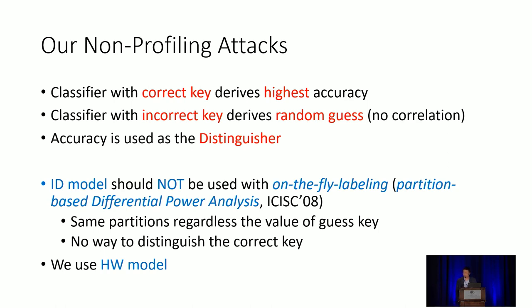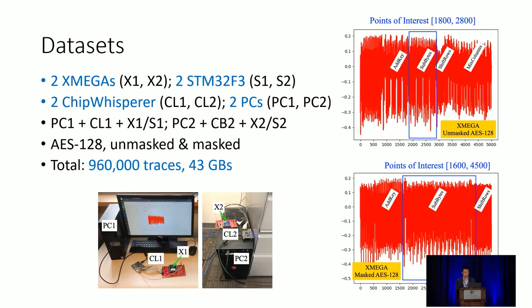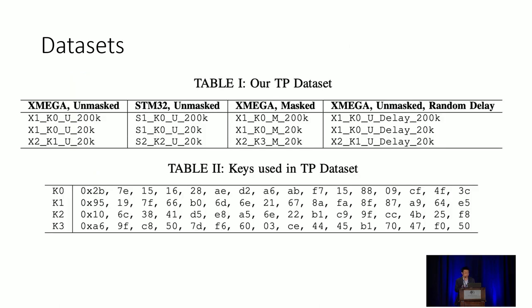We collected data from microcontrollers using ChipWhisperer. We have two sets: one for same-device setting and one for cross-device setting, as well as traces for non-profiling attacks. Overall we provide almost one million power traces. Here are examples of power traces from different targets with points of interest identified in advance. We have traces from XMEGA and Mask, STM32 and Mask, and XMEGA and Mask with random delay.